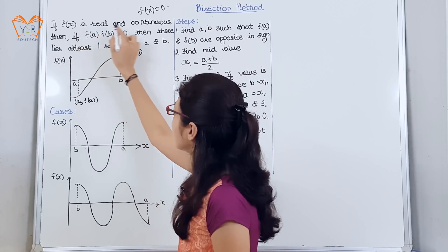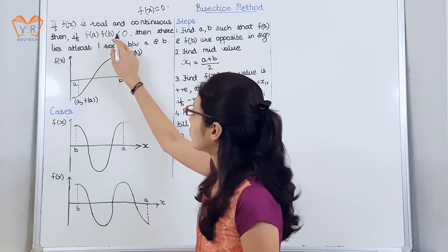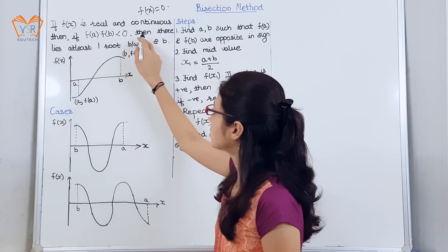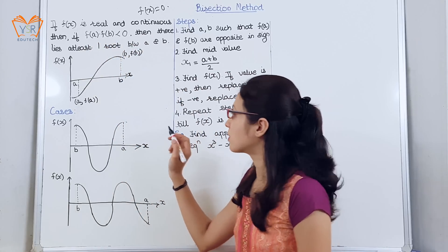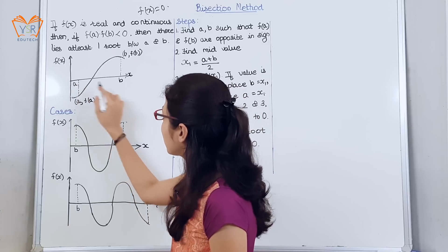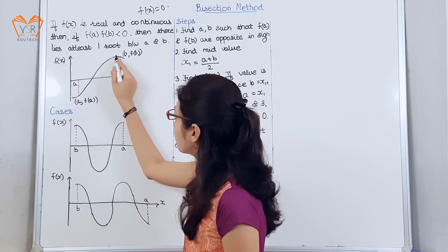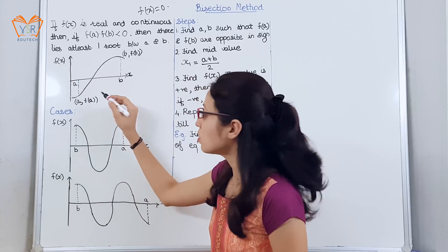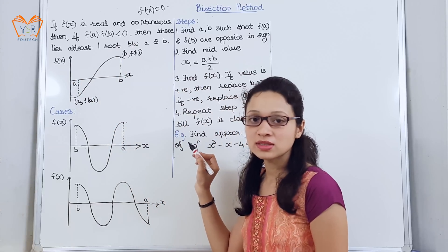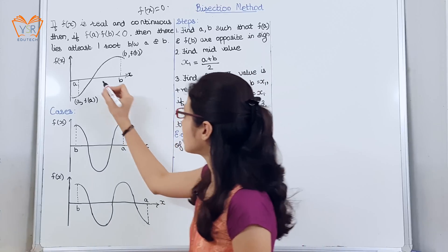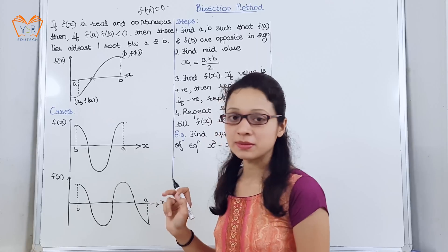If f(x) is real and continuous, and if f(a) multiplied by f(b) is less than 0, then there will lie at least one root between that interval. Suppose this is a and this is b, so f(a) is negative and f(b) is positive. So f(a) × f(b) will surely be less than 0, meaning there will be at least one root in the interval a and b.